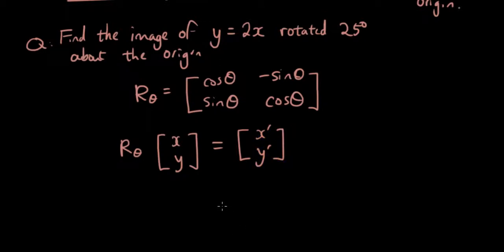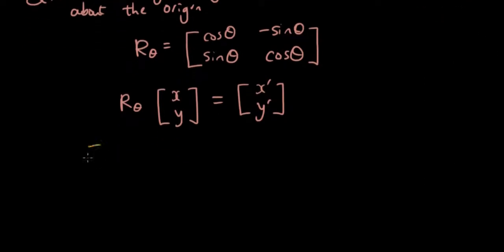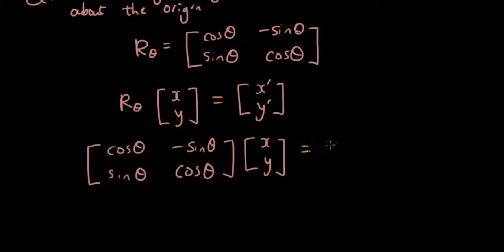Okay, so let's replace R_θ with our matrix: cosθ, negative sinθ, sinθ, cosθ, times x and y equals x' y'.